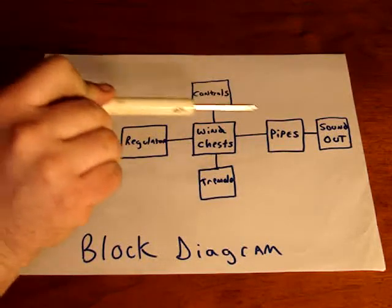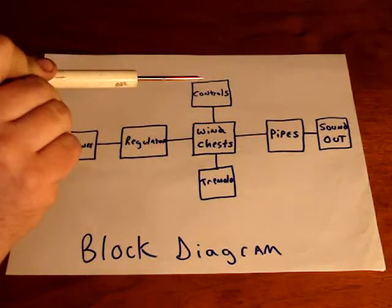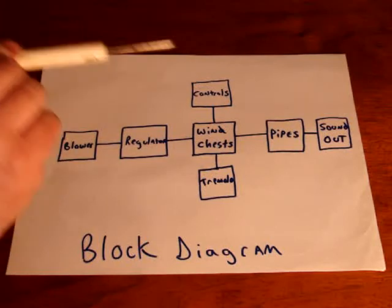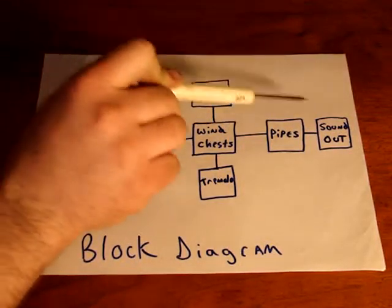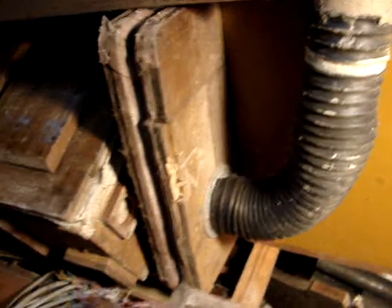The wind chests obviously feed air to the pipes, because they're sitting directly on top of the wind chest, and then the pipes give you sound out. Now let's look at how the different parts of this work.